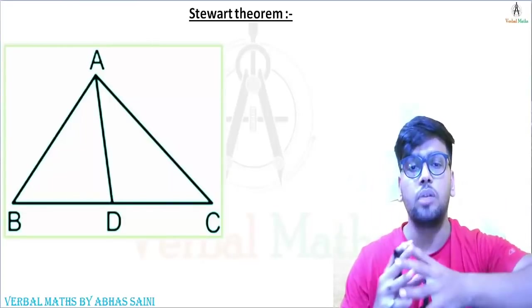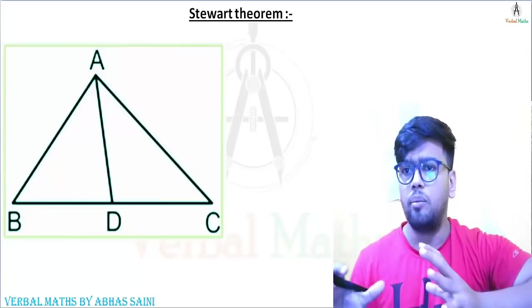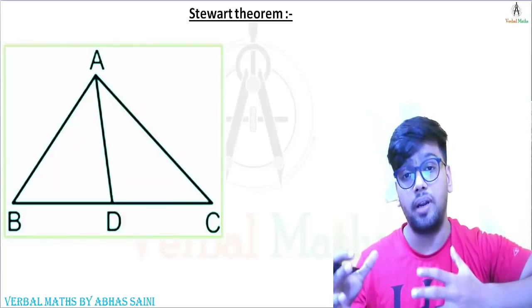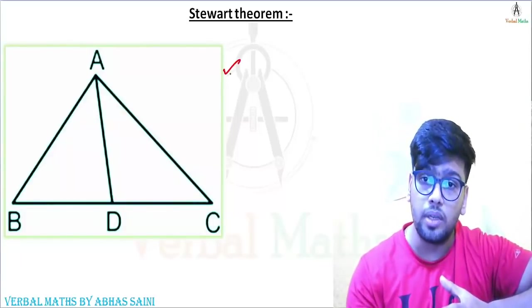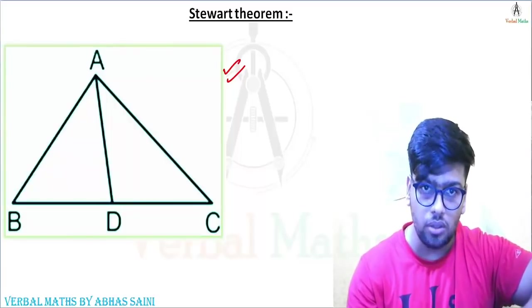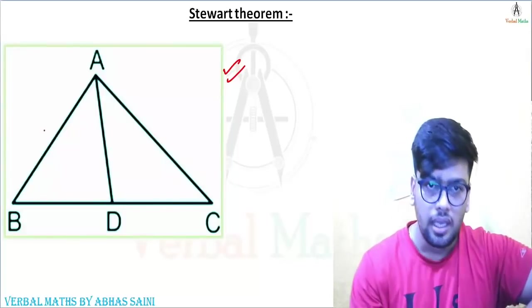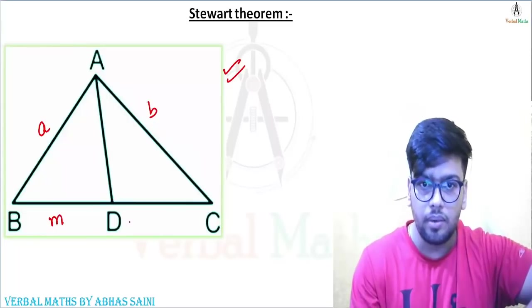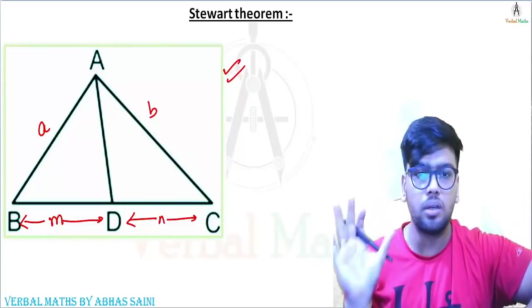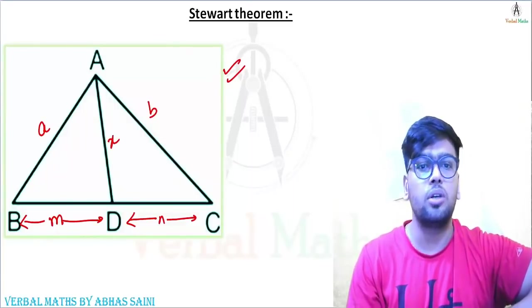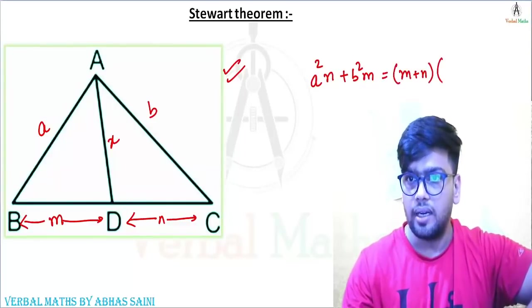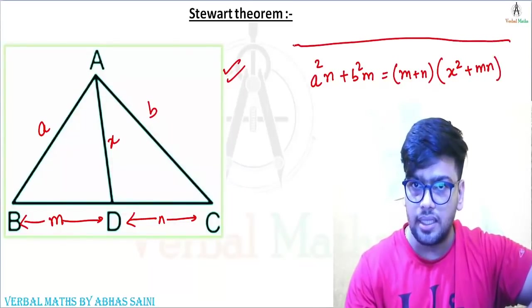Let me introduce Stewart's Theorem — we do not need to prove it. This is your triangle ABC and AD is any Cevian. Let AB equal c, BD equal M, CD equal N, and AD equal X. Stewart's Theorem states: A²N + B²M = (M + N)(X² + MN). This result is actually Stewart's Theorem.